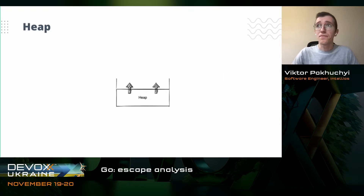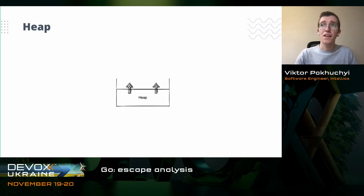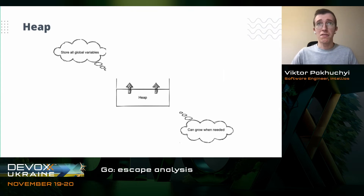On the other hand, we have a heap. The heap is used for storing dynamic memory allocations. All global variables are stored on the heap. Moreover, some references to structures, maps, and complex data structures may also be stored here. The heap can grow, and everyone knows this, because it's a pain — a big heap is a really big pain.